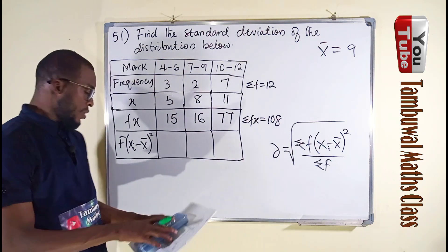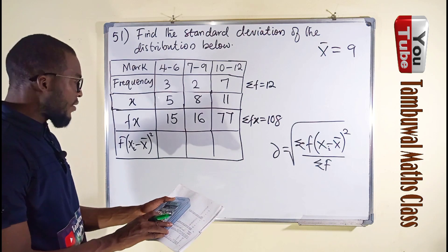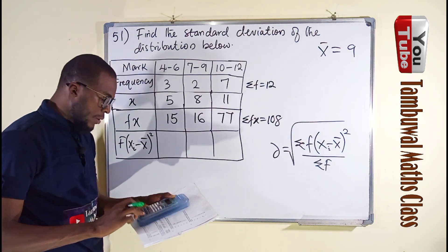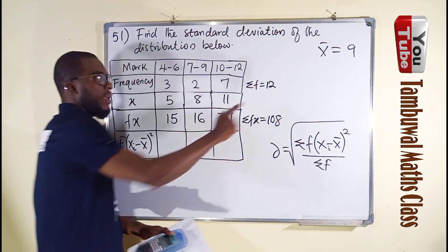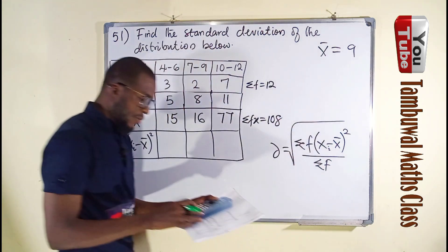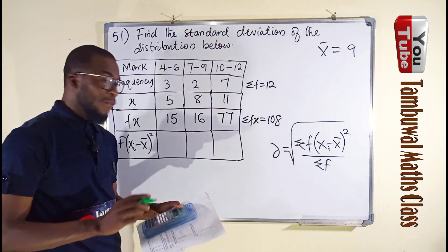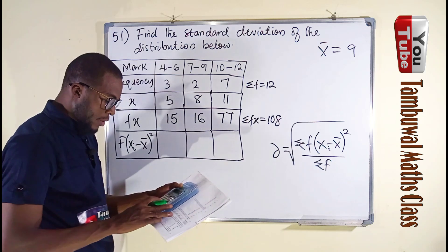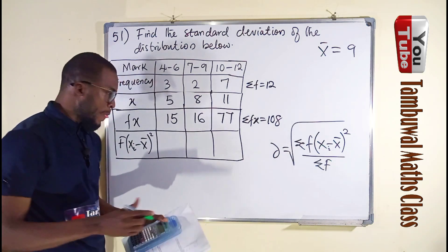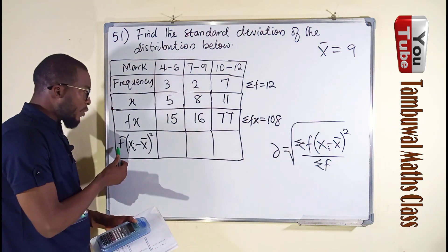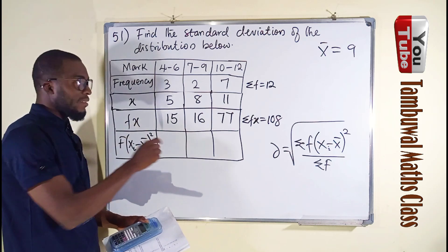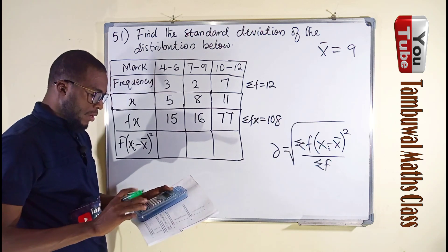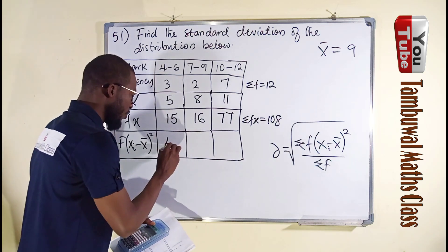Now let me take my calculator. Our first x is 5, so we have 5 minus x bar, and our x bar is 9, so we subtract 9. We have negative 4. Then we square, because we have a square here, we take the square, we have 16. Then we multiply by the frequency of that class, and the frequency of that class is 3. Then we turn it by 3, and we have 48.